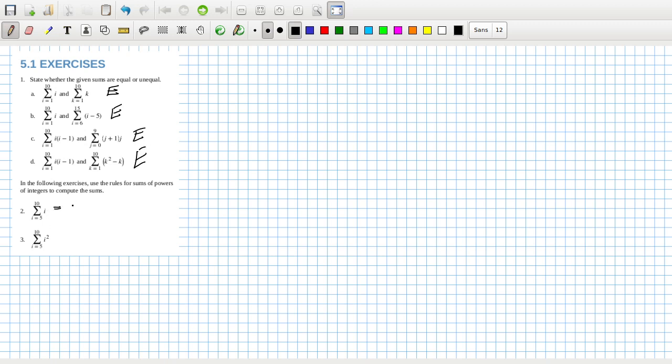Okay, this is five plus six plus seven plus eight plus nine plus ten. And this is five squared plus six squared plus seven squared plus eight squared plus nine squared plus ten squared.